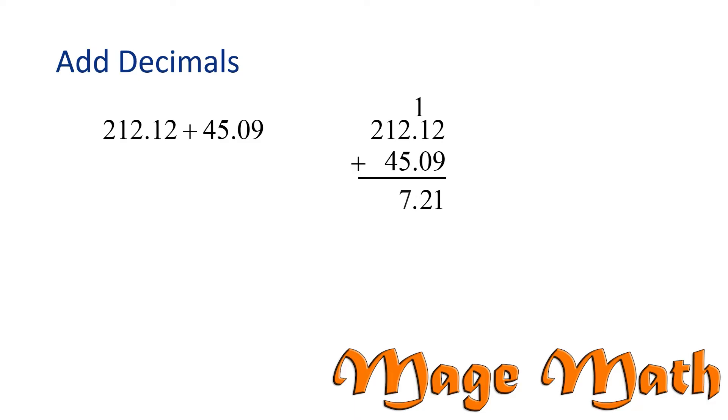2 plus 5 is 7. 1 plus 4 is 5. And then we bring down the 2. We found the sum is 257.21.